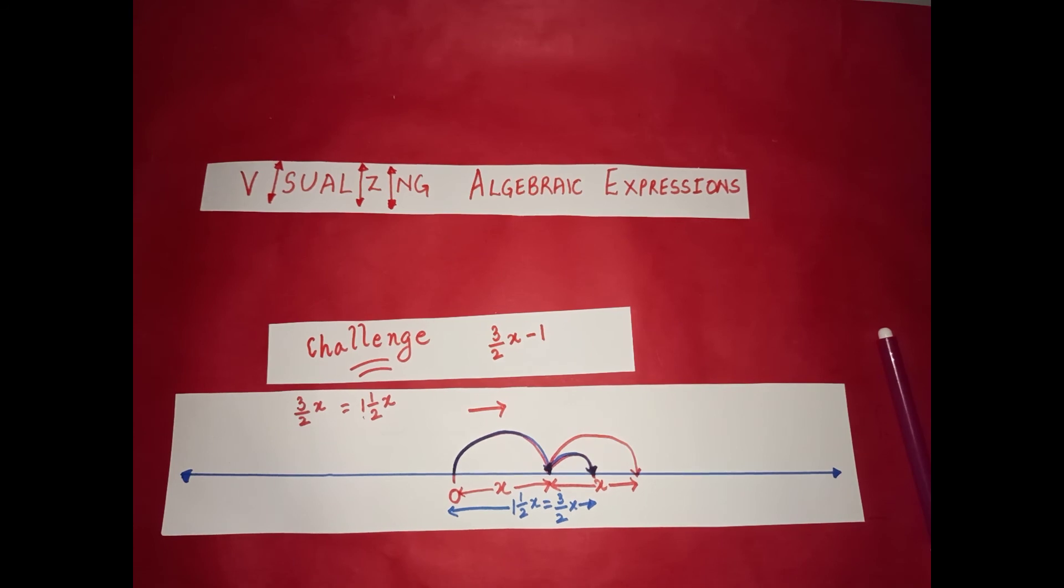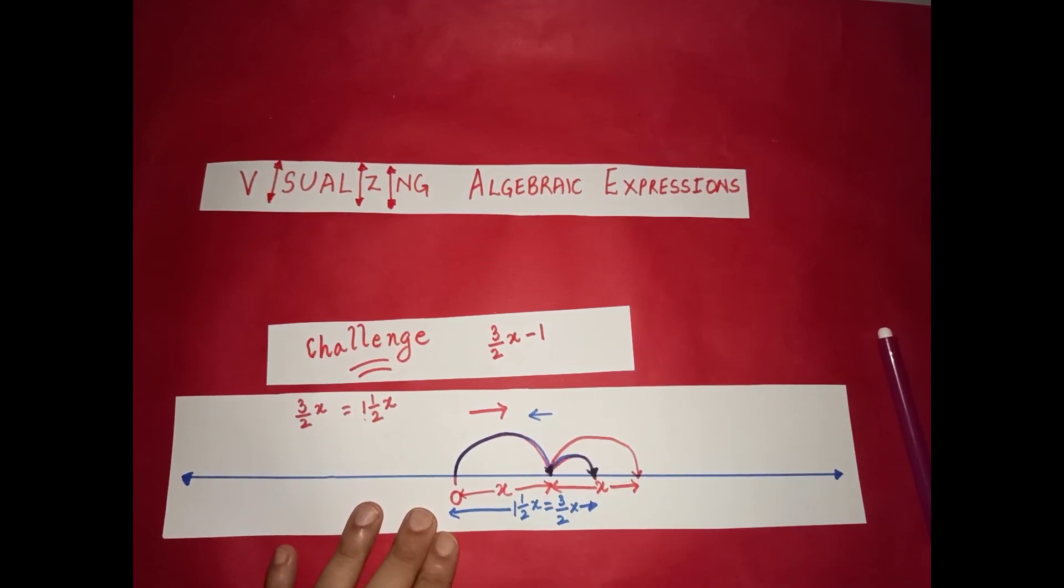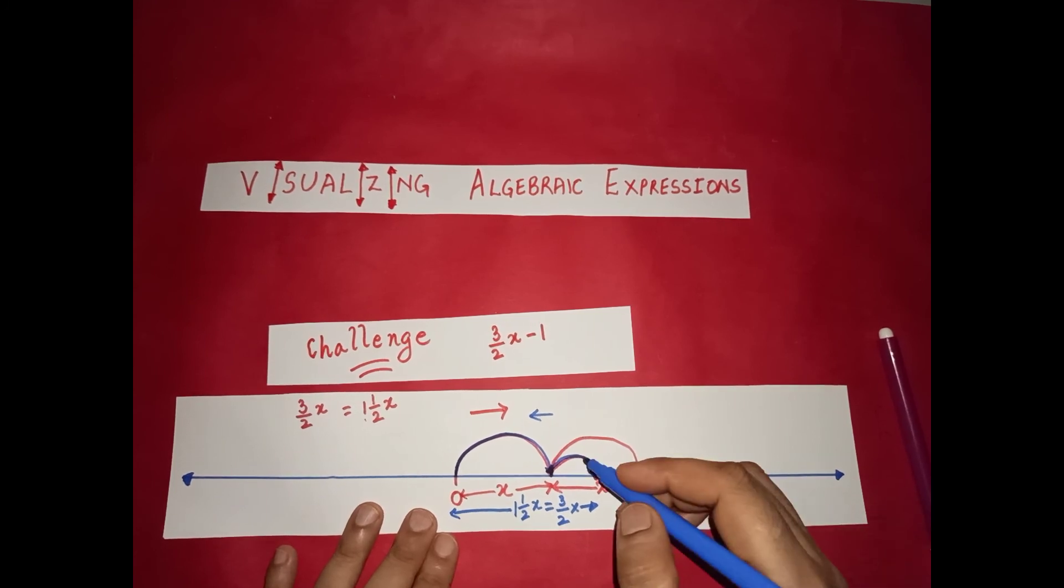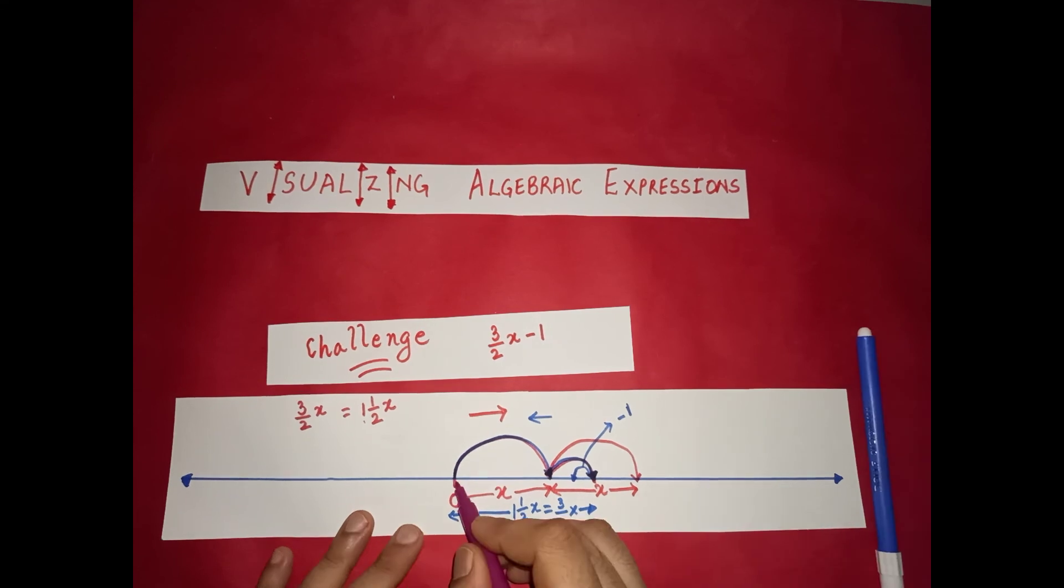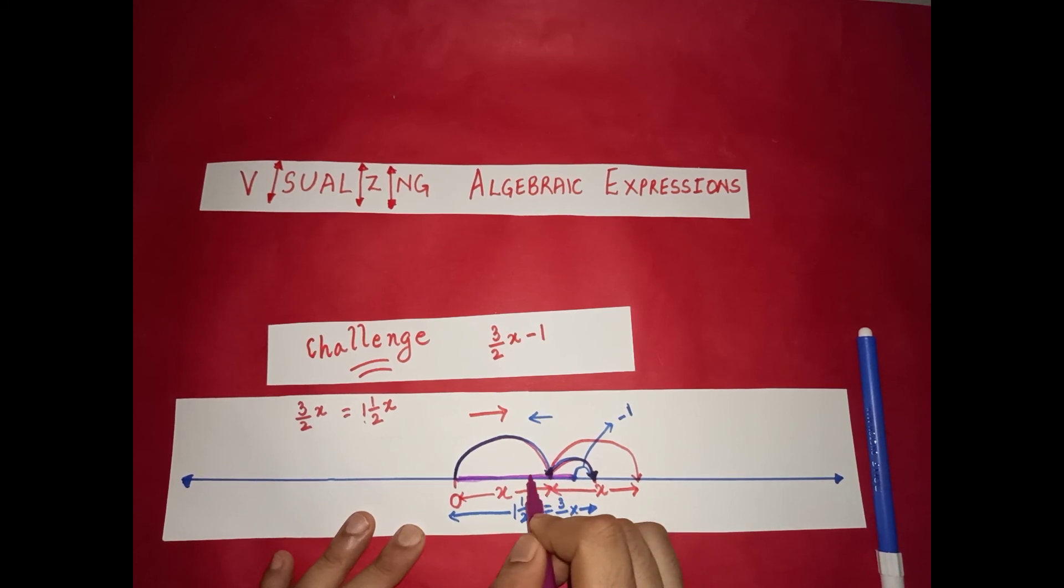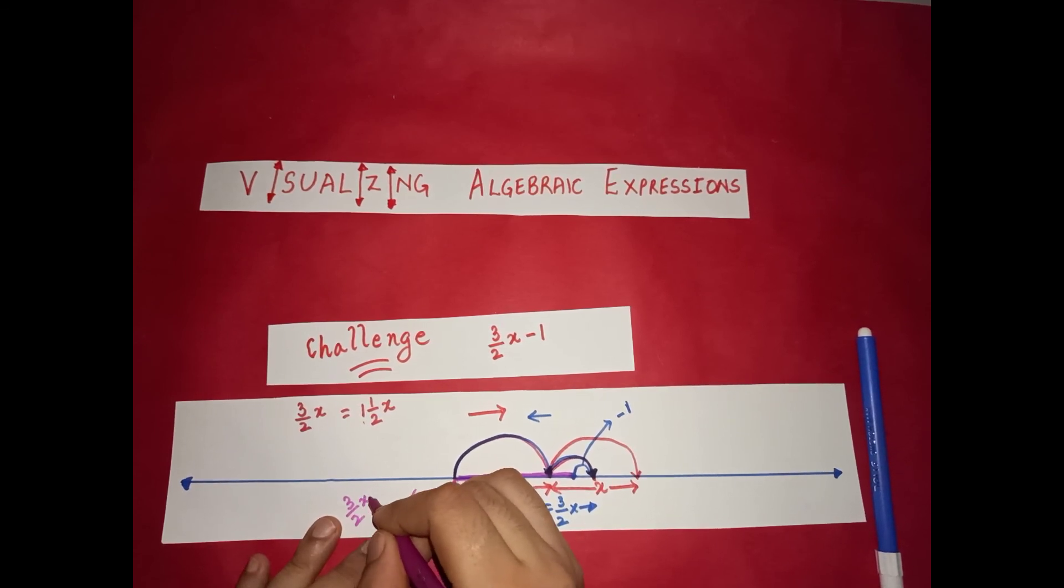So now let's look at that expression again. We have 3 by 2 x minus 1. So minus 1 means that we have to go in the opposite direction, towards the left side. Now we need to go in the other direction because it is negative 1. So let's assume our negative 1 is this much. This is our negative 1.